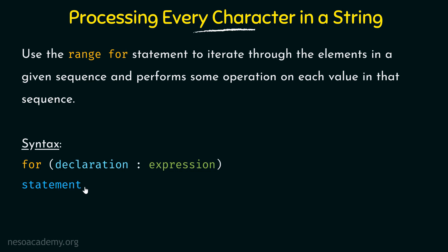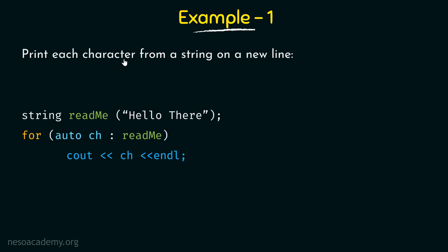In the first example, we want to print each character from a string on a new line. We have a string called readme storing the literal 'hello there', and we want h on the first line, e on the second, l on the third, and so on. We write the for keyword and within parentheses use a variable called ch to process each character. We use the auto keyword so the data type is automatically determined.